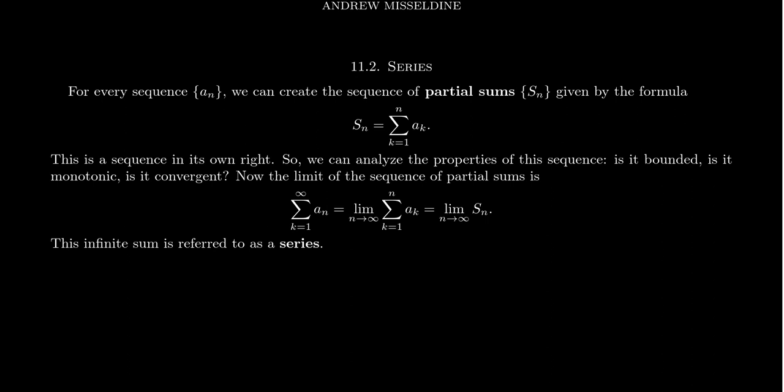So imagine we have a sequence, a sequence will denote it as just a sub n right now, so this is just a list of numbers. Now from a sequence, we can construct a new sequence, which is referred to as the sequence of partial sums. And it's given by the following formula, s sub n is going to equal the sum where k ranges from 1 to n of the sequence a_k.